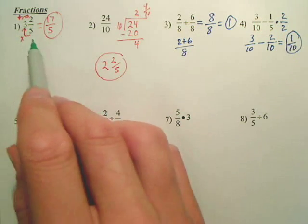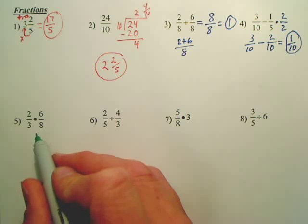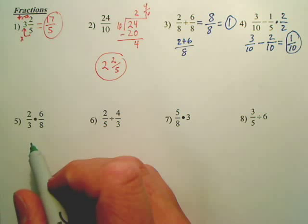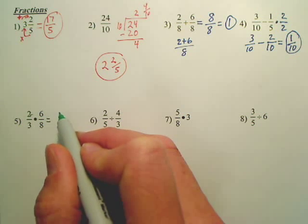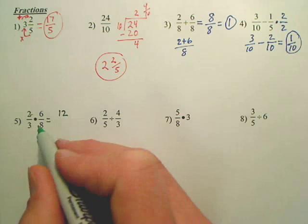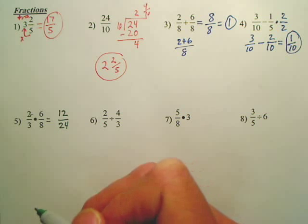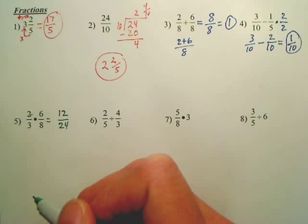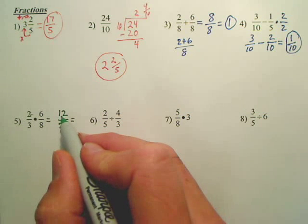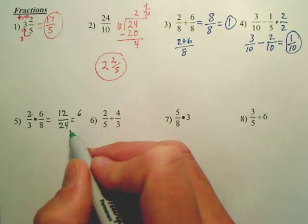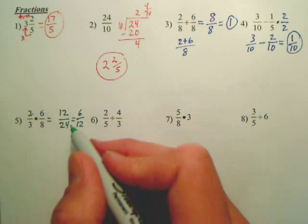So we have simplifying fractions, changing them back and forth. We have adding, subtracting fractions. Let's do some multiplying fractions. When we multiply fractions, we talked about just simply multiplying straight across. So 2 times 6 is 12. 3 times 8 is 24. And then we look at that and go, okay, what goes into both those?